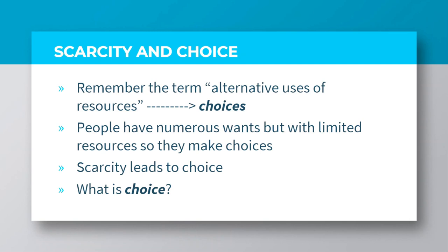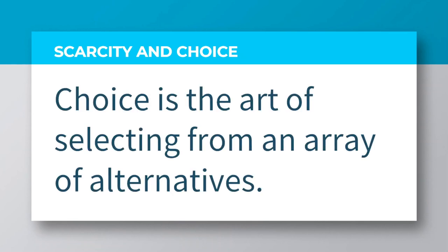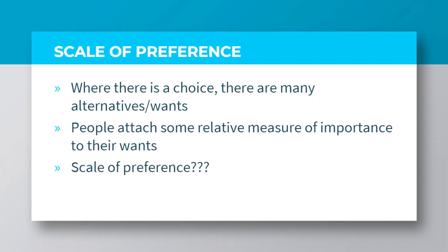People have numerous wants, but with limited resources, so they make choices. Basically, scarcity leads to choice. What then is choice? Choice is the art of selecting from an array of alternatives. Where there is a choice, there are many alternatives or wants to choose from. Usually, people attach some relative measure of importance to their wants, and this brings about the concept of scale of preference.